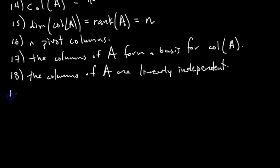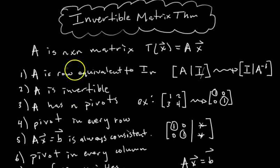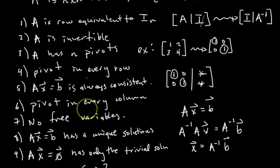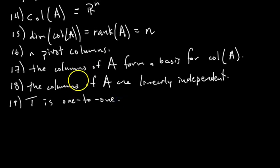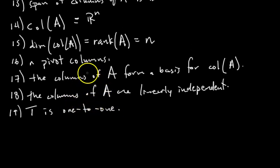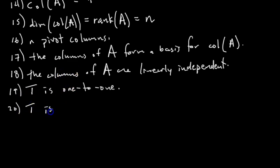Now considering the transformation T defined to have A as its standard matrix: if A is row equivalent to I, or if any of these 18 things are true, then T is one-to-one. This is because a transformation is one-to-one when its standard matrix has a pivot in every column — which we've clearly identified. And since A is square and has a pivot in every column, it also has a pivot in every row, so T is also onto.